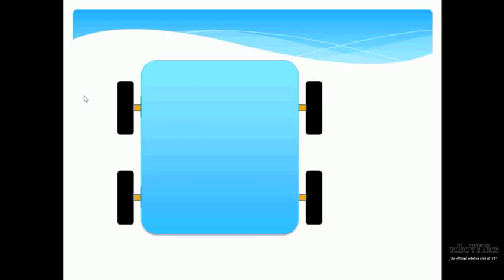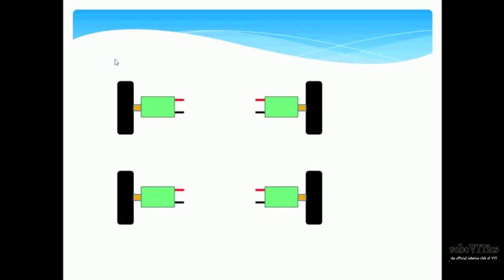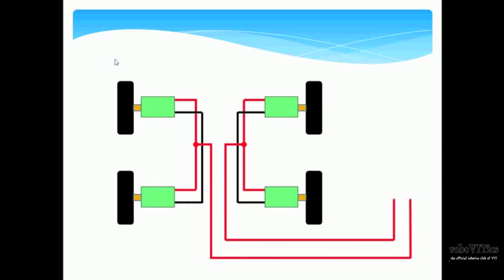Now let's have a look at the overall circuit diagram. This is your bot and these are your motors. Now connect the positive of the left motors together, the negative of the left motors together. Repeat the same with the right motors. Now take these connections out separately as shown.